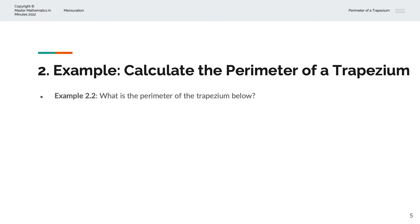In the second example, we're asked to calculate the perimeter of the trapezium below. With sides 17, 21, 25 and 27 centimeters. And so the perimeter, P, is equal to 17 plus 21 plus 25 plus 27. And that is 90 centimeters.